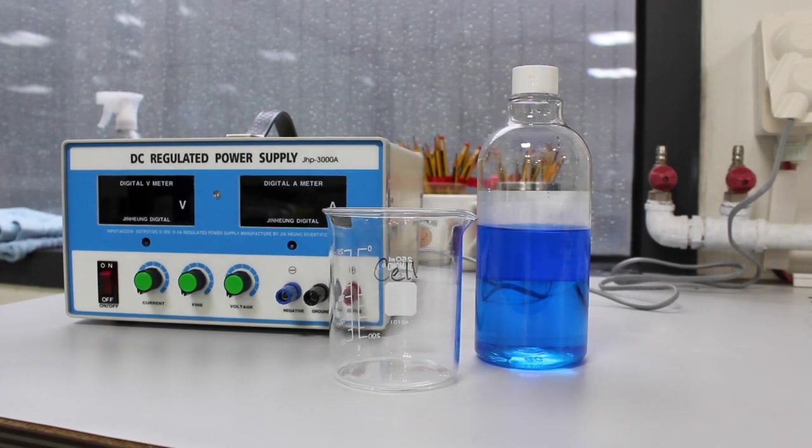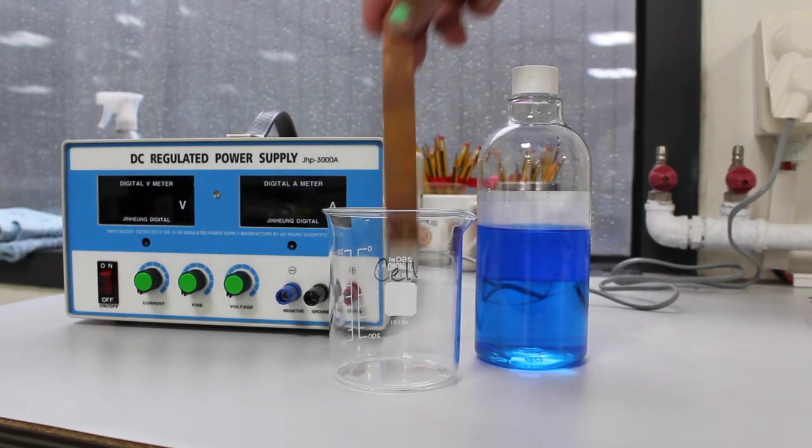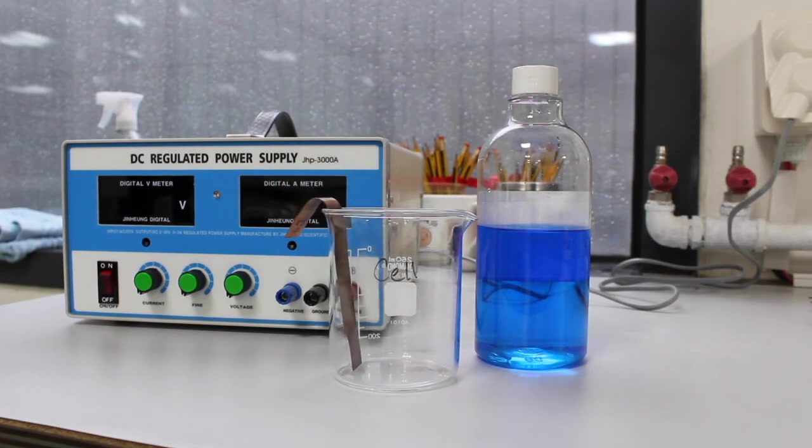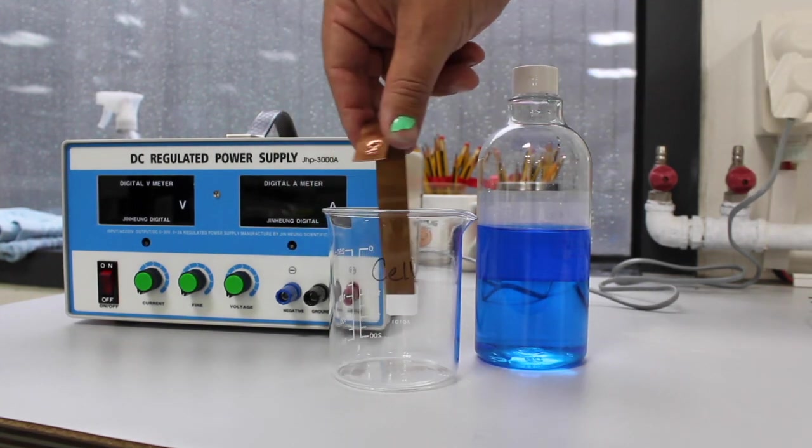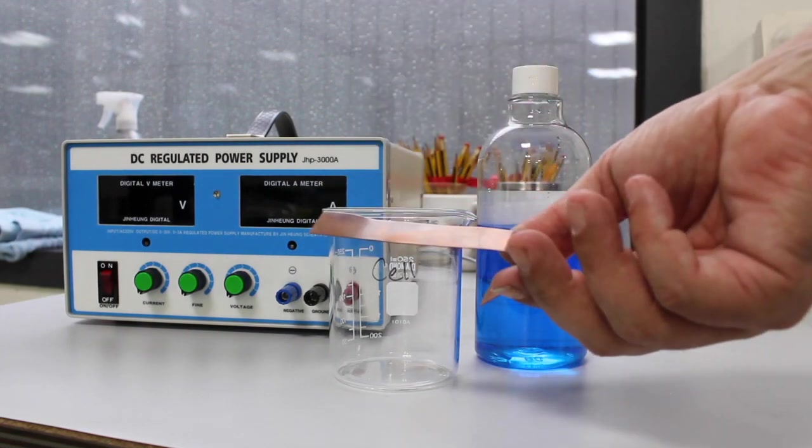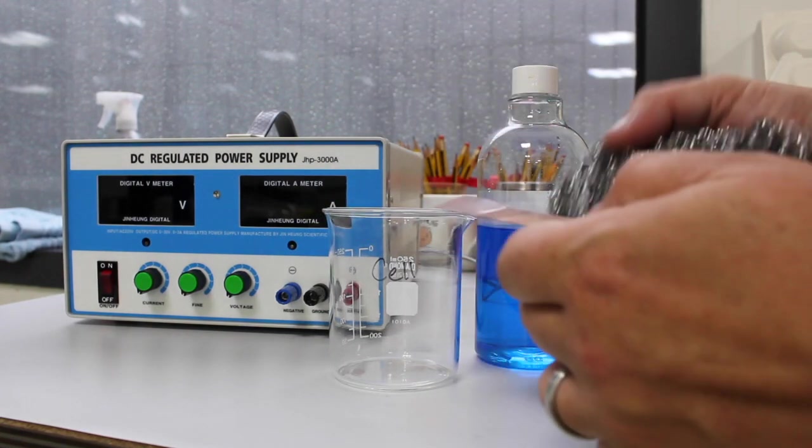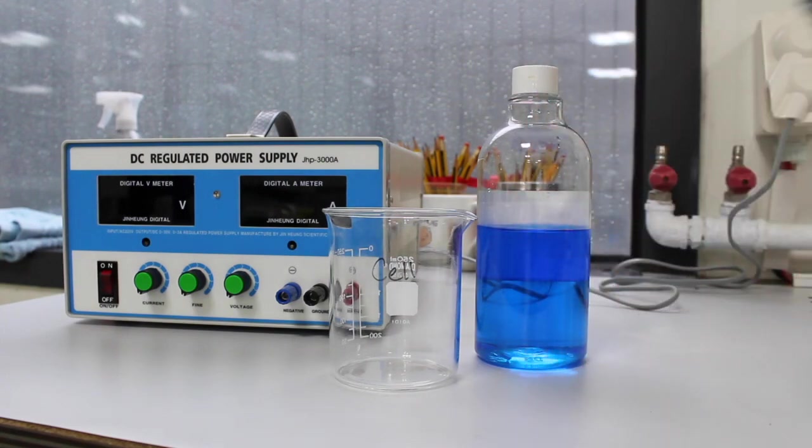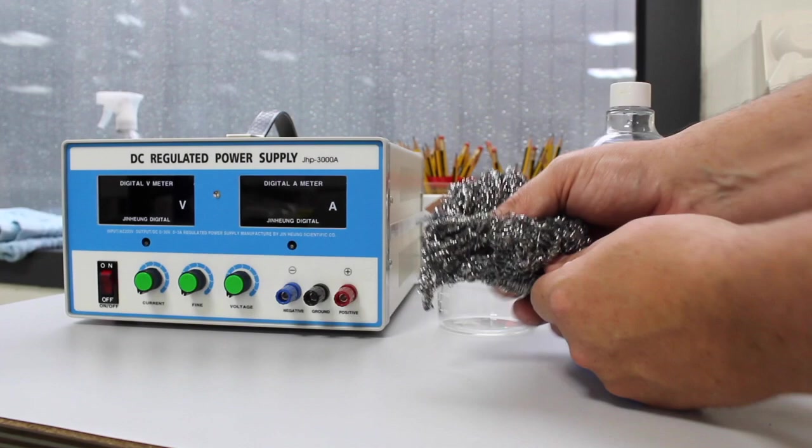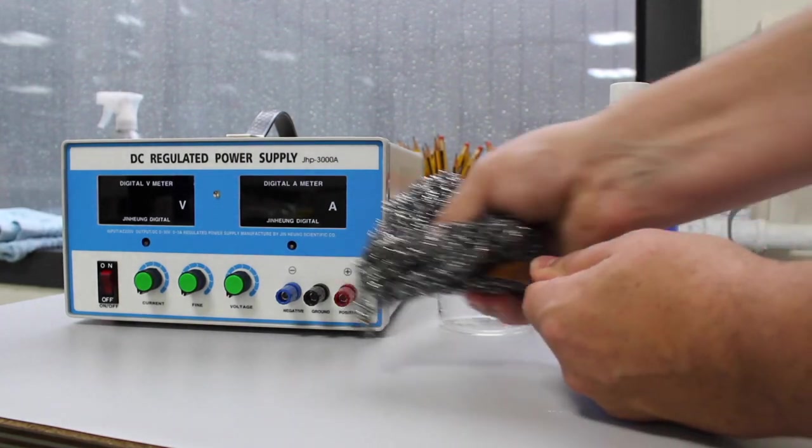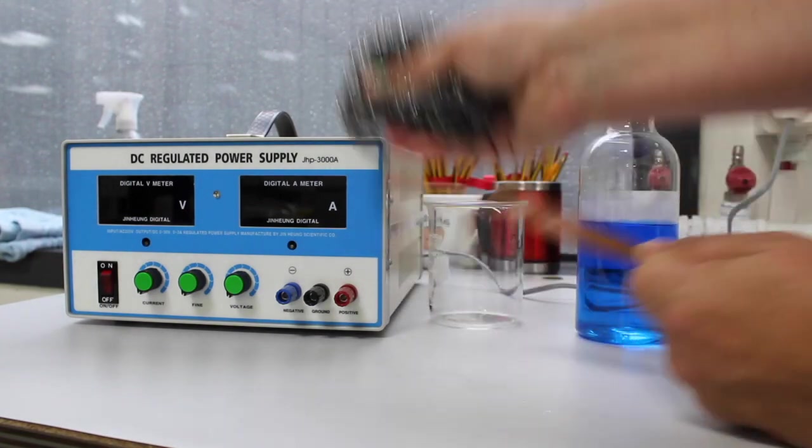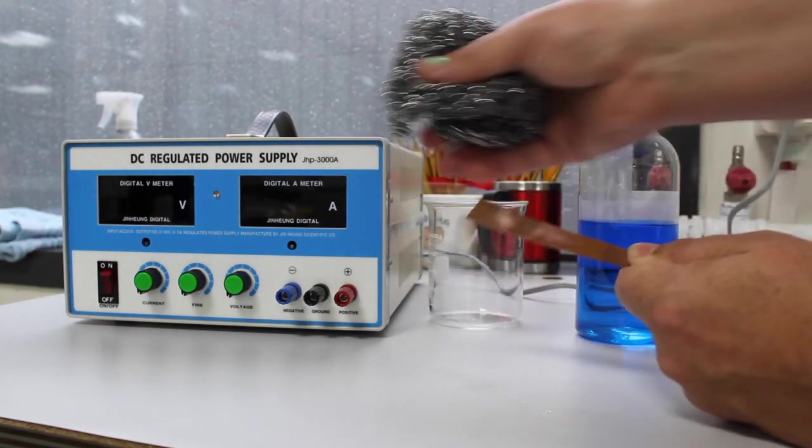We will set up our cell in a beaker. One electrode will be the copper strip. We can just bend over the edge and let it sit in there. We want to polish this up as nice and pretty as possible too so we will use the steel wool to do that. Don't do it on the table because that will scratch it up. You want a nice shiny copper surface.